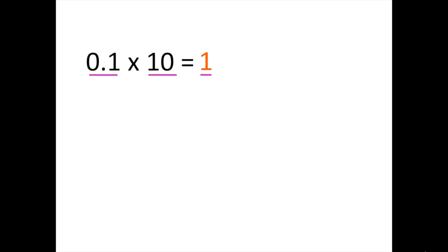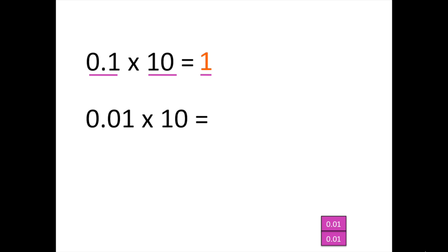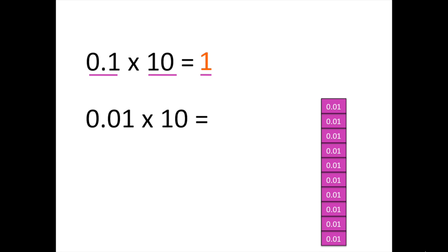Now let's solve 1 hundredth times 10 and look at another visual representation. Let's look at 10 groups of 1 hundredth. If we add up all the 1 hundredths, we end up having 10 hundredths. If we simplify 10 hundredths, we get 1 tenth. We can write 1 tenth as a decimal: 0.1, which is also read as one tenth. So 1 hundredth times 10 equals 1 tenth.